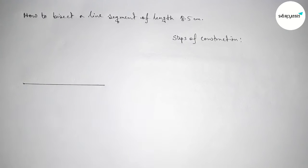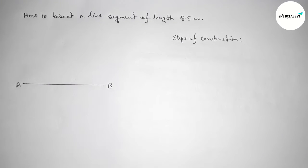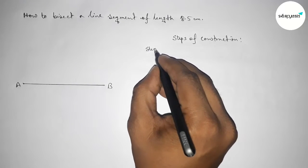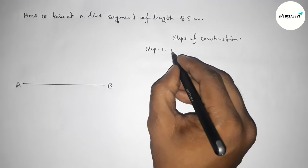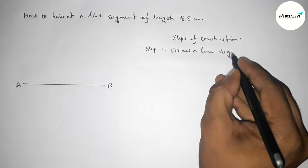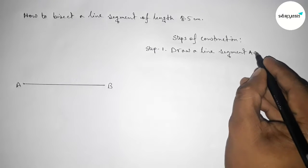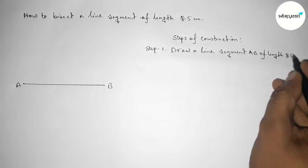Okay, so now taking here point A and here B. So step number one: we have to first draw a line segment AB of length 8.5 centimeters by using a scale.